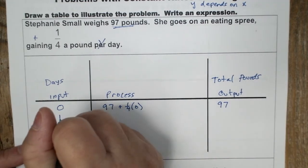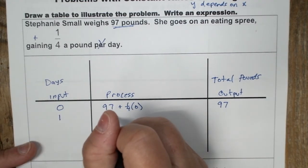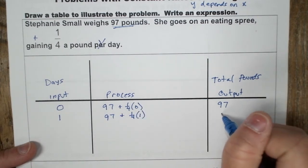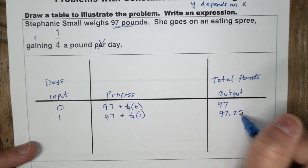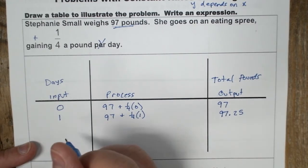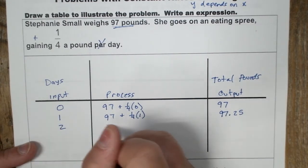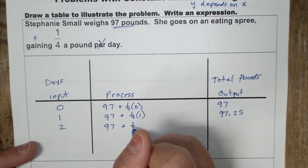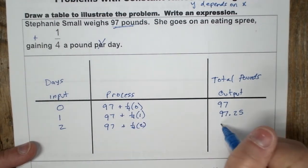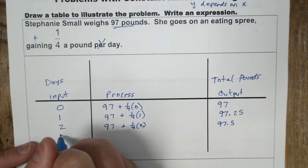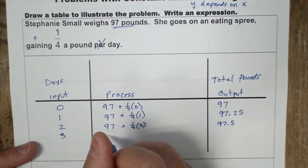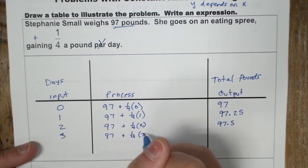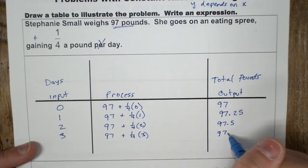And then on day one, it would be 97 plus one fourth times one, which is 97.25. And then you would have day two, 97 plus one fourth times two, and this is 97.5. Three, 97 plus one fourth times three, 97.75.